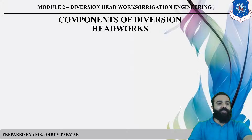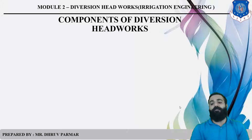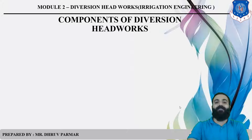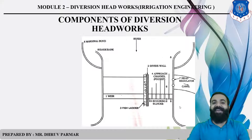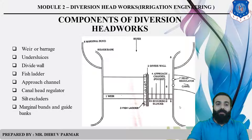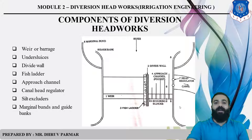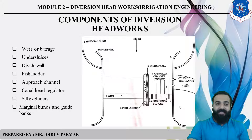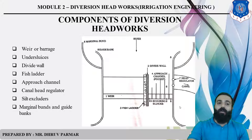In this session, we discuss the components of Diversion Headworks. There are various types of components. This is a general layout of Diversion Headworks. There are a total of eight components: Weir or Barrage, Undersluice, Divide Wall, Fish Ladder, Channel, Canal Head Regulator, Silt Excluder, and Marginal Bund and Guide Bund. All these things are required in Diversion Headworks.